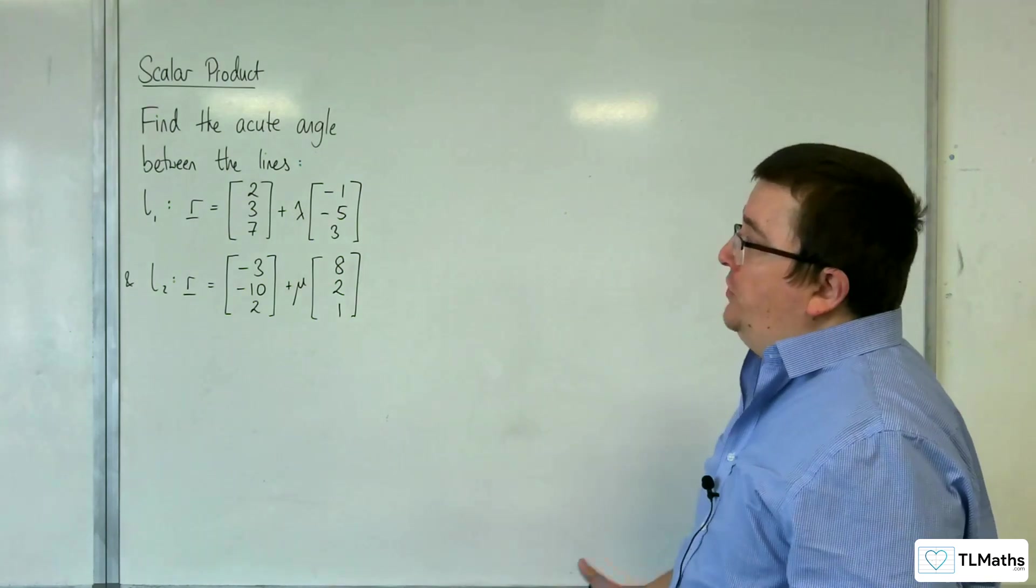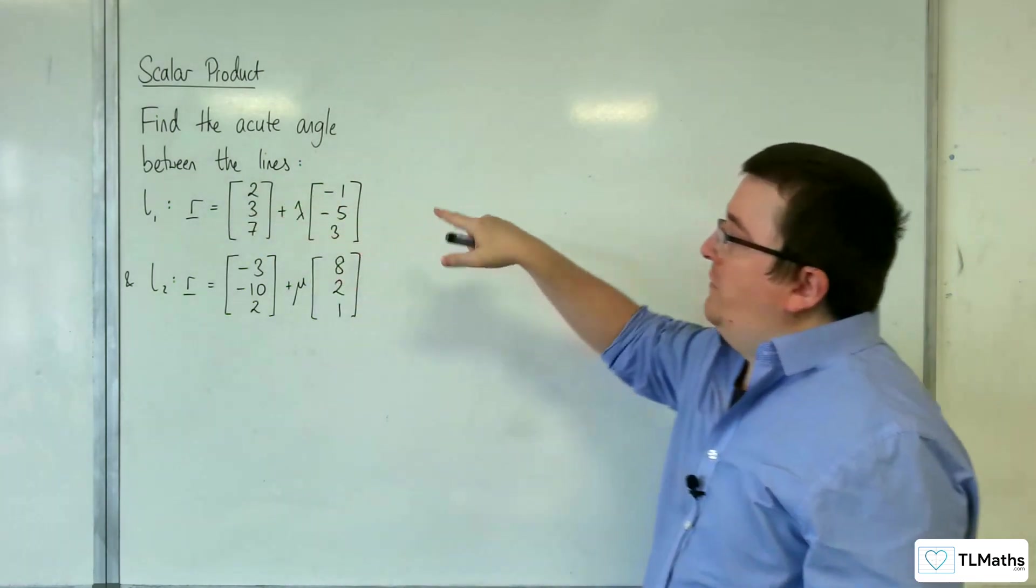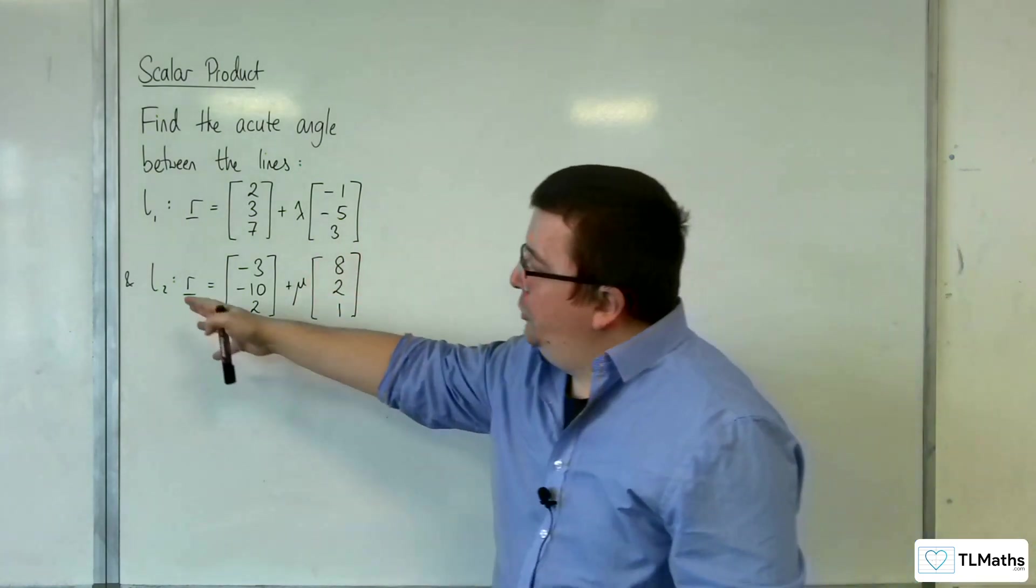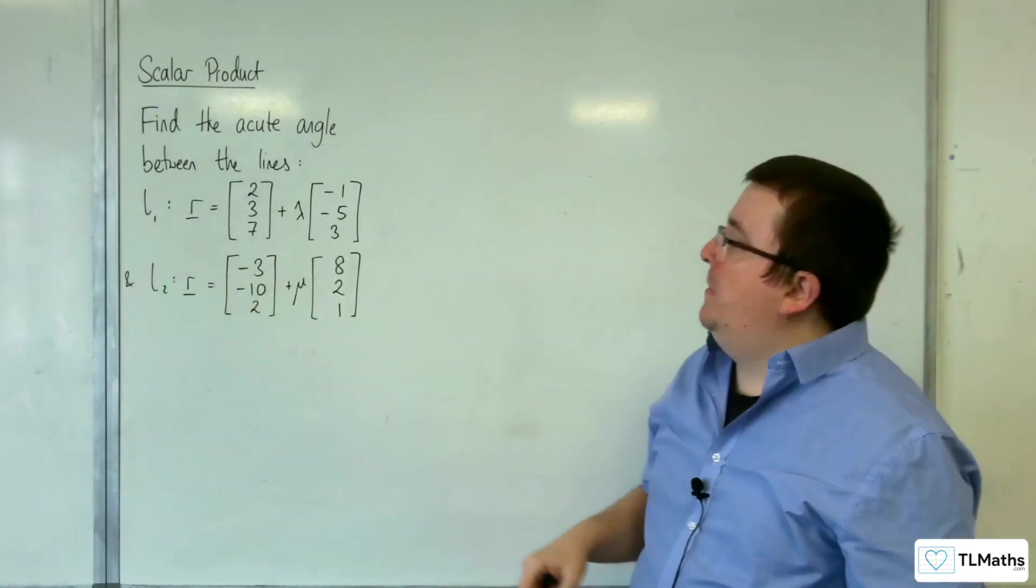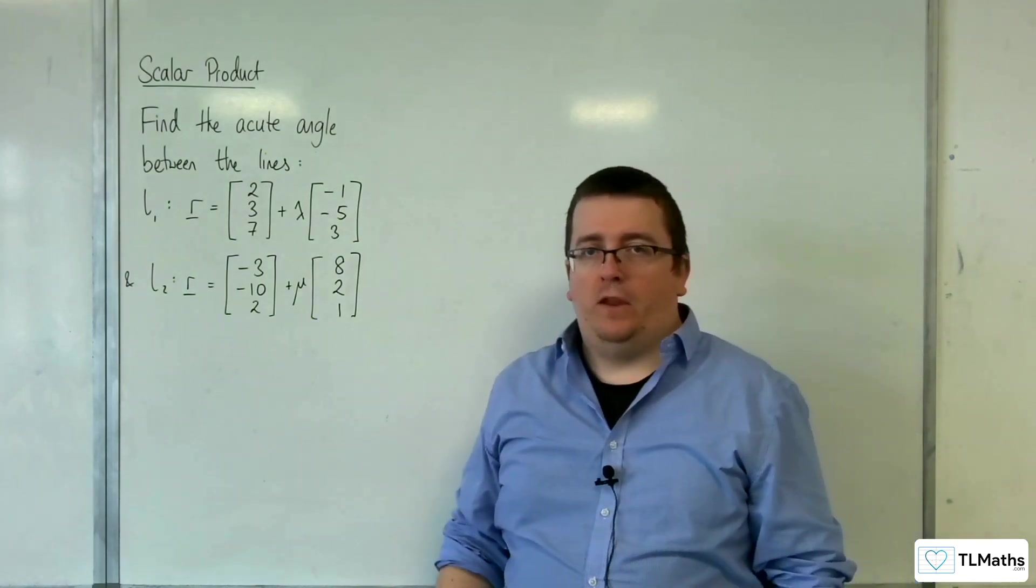Let's say we want to find the acute angle between the lines L1, which is R equals (2, 3, 7) plus lambda times (-1, -5, 3), and line 2 is R equals (-3, -10, 2) plus mu times (8, 2, 1).